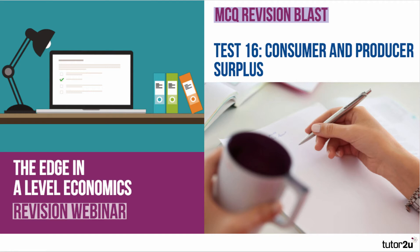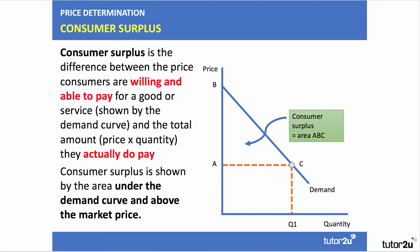Consumer and producer surplus is all to do with welfare economics — the wealth of consumers and the wealth of suppliers out of the market. Consumer surplus is defined as the difference between the total amount that consumers are willing and able to pay for a product, indicated by the demand curve, and the total amount they actually do pay — the price times the quantity. We normally show the area of consumer surplus as the area underneath the demand curve and above the market price, in this case area A, B, C if quantity Q1 is bought and sold.